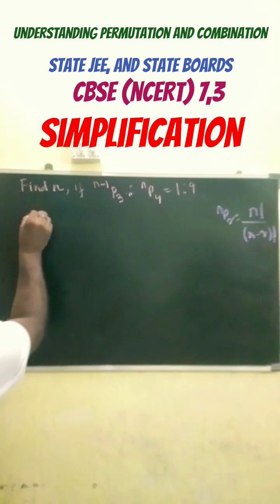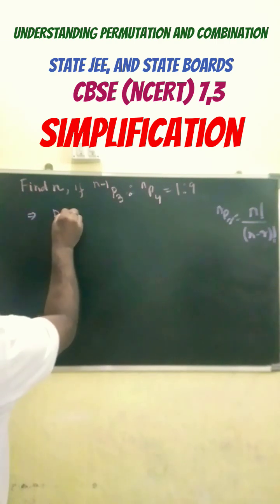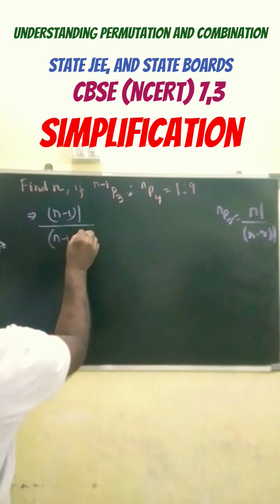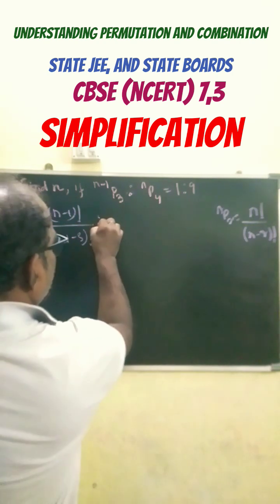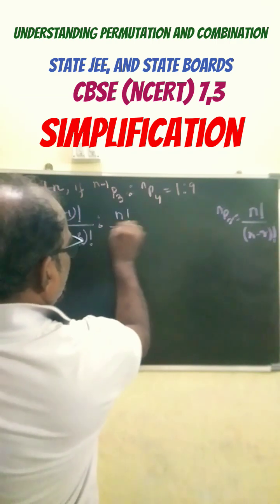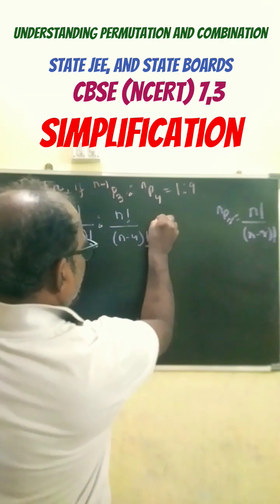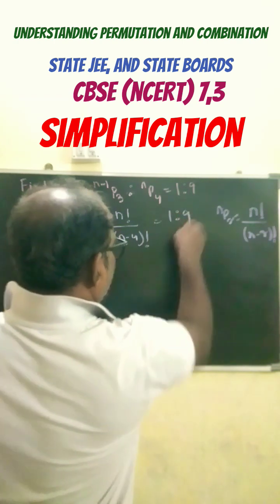So from here we can get it here that is n minus 1 factorial by here it is n minus 1 minus 3 factorial is to n factorial by here we get n minus 4 factorial equals to 1 is to 9.